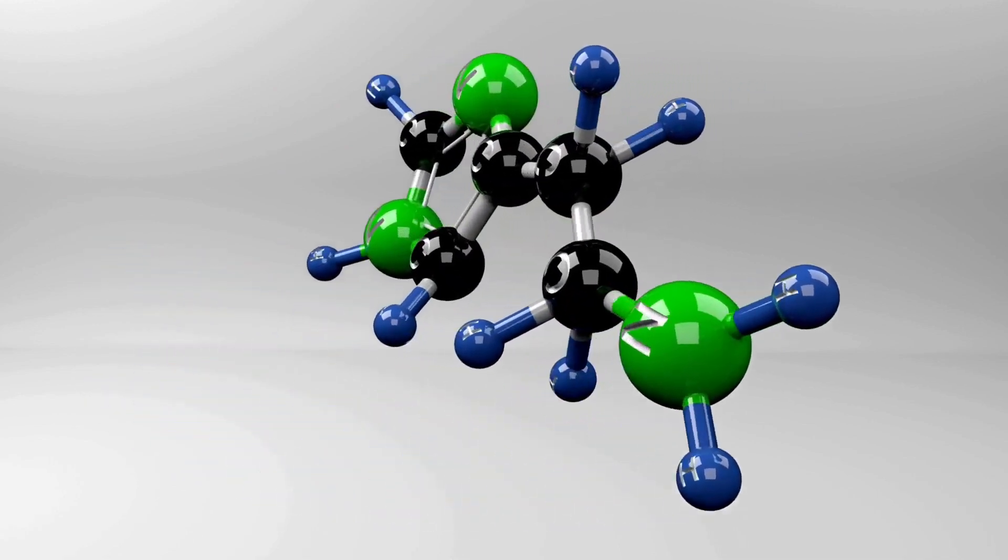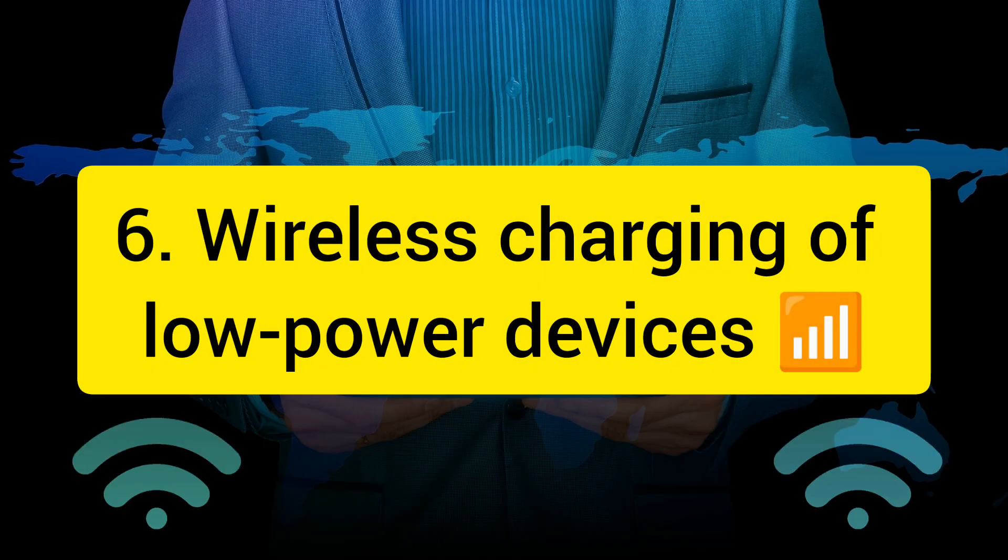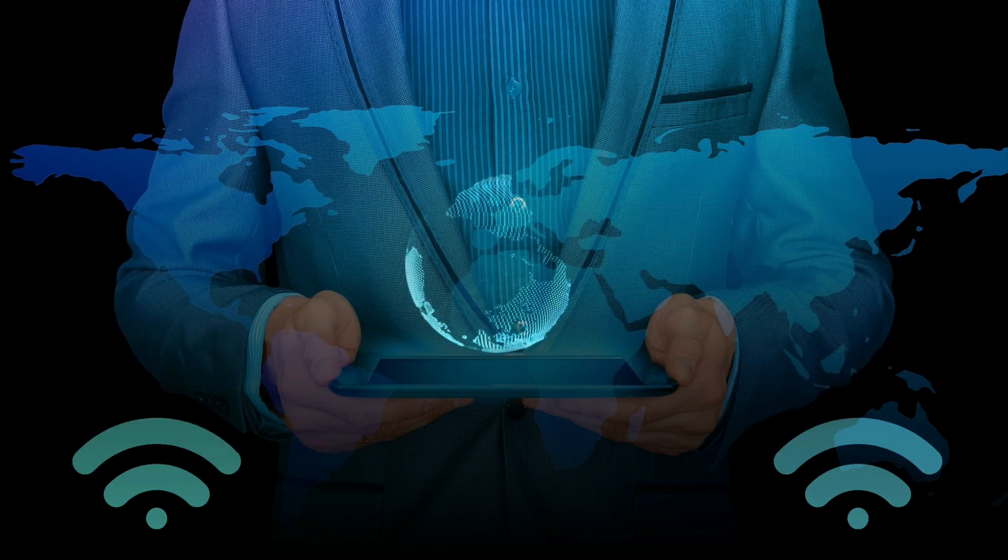Green ammonia is produced by using renewable electricity to split water into hydrogen and oxygen, then combining the hydrogen with nitrogen from the air. Six: Wireless charging of low-powered devices. This technology allows devices such as sensors,